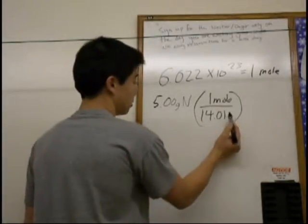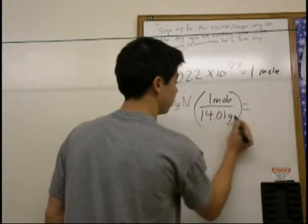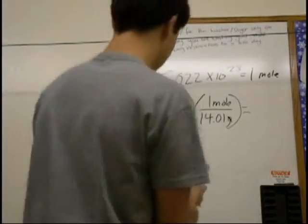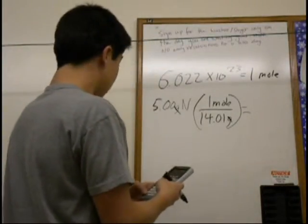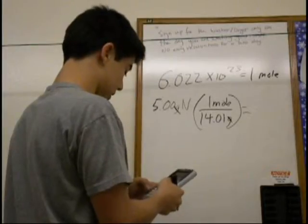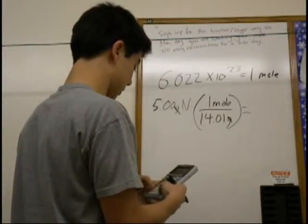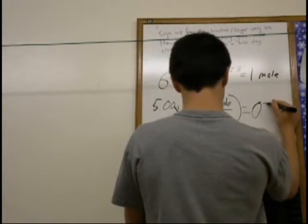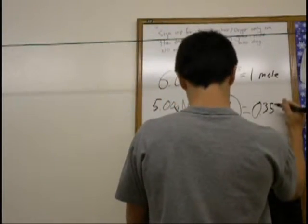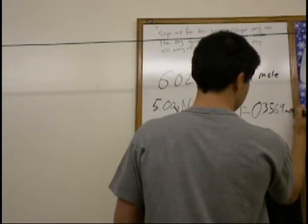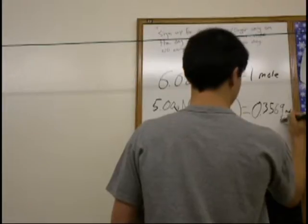So, we will multiply across: 5.00 grams divided by 14.01, which is equal to 0.3569 moles of nitrogen.